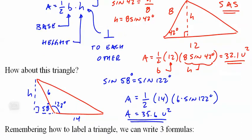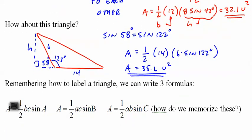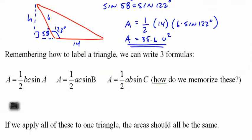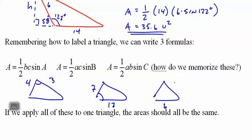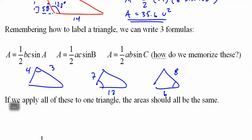For SAS, the angle must be the included angle — between the two known sides. For example, sides 3 and 4 need their included angle; sides 7 and 12 need their included angle; sides 6 and 8 need their included angle. As long as you have the included angle, you can run through this formula.